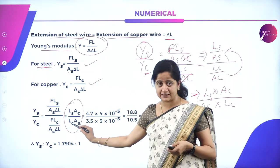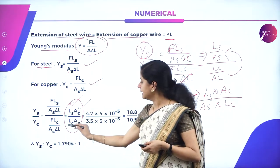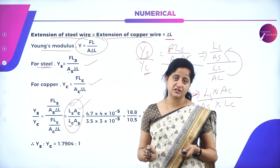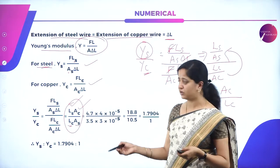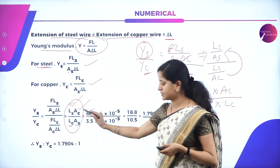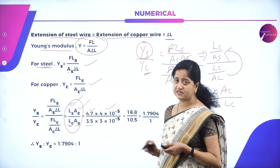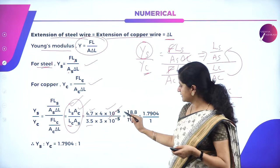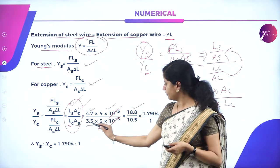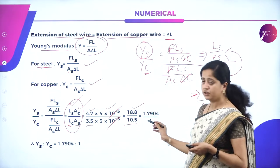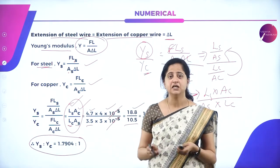So Y_S / Y_C = (L_S × A_C) / (L_C × A_S). Substituting the values: L_S = 4.7 m, A_C = 4×10⁻⁵, L_C = 3.5 m, A_S = 3×10⁻⁵. The powers of 10 cancel, giving (4.7 × 4) / (3.5 × 3) = 18.8 / 10.5 = 1.79. So the ratio of Young's modulus of steel to that of copper is approximately 1.79.